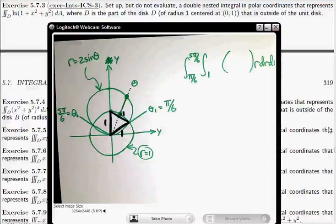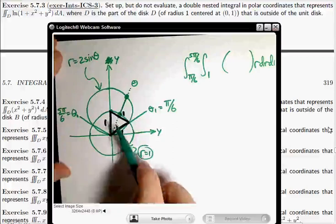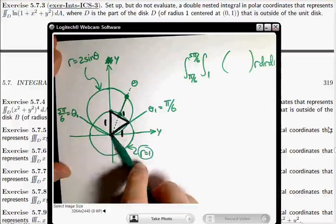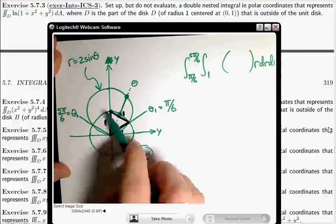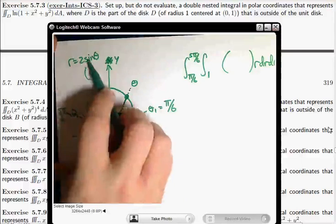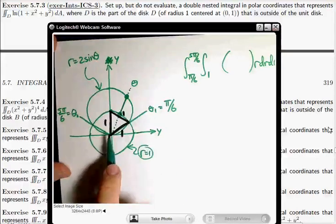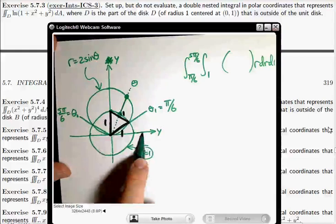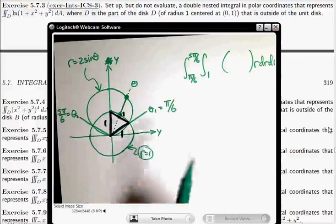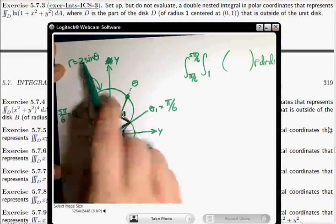By the way, it's also a good thing to sort of remember that when you have circles that are tangent to the origin centered on the y-axis, it's going to be something times sine θ. And when you have circles that are tangent to the origin centered on the x-axis, it's going to be something times cosine θ. And this number, I mean honestly, I just look at what's the maximum value of r? Oh, it's two.